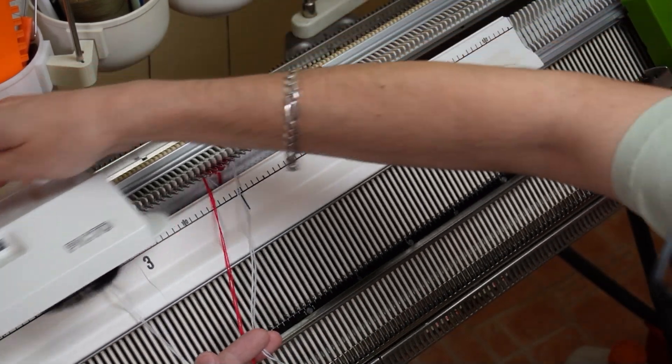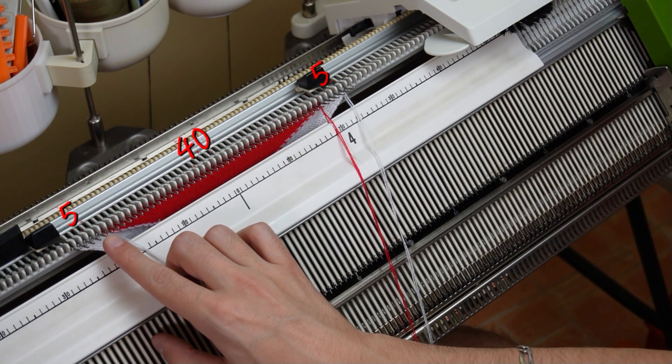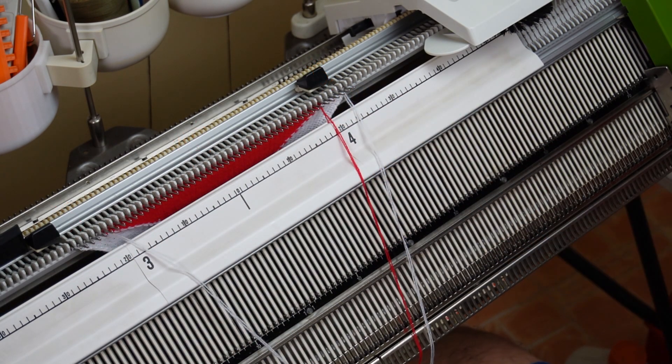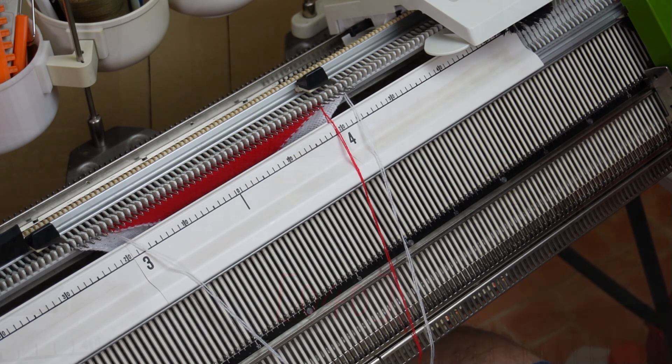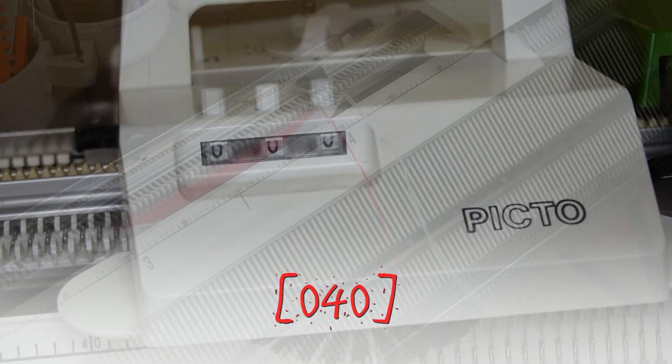Continue the same way until you have forty red stitches in the center and five white stitches at each end of the knitting. The row counter should be at forty rows. You can reset it to prepare the picto for the next section.